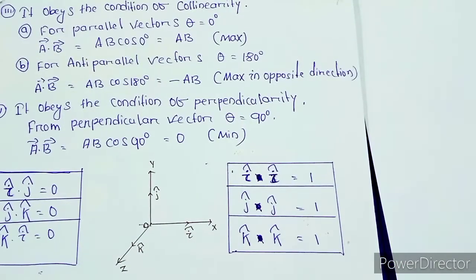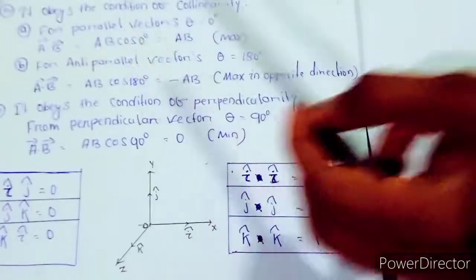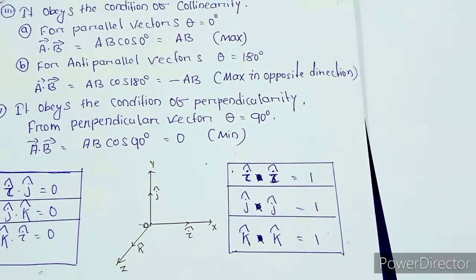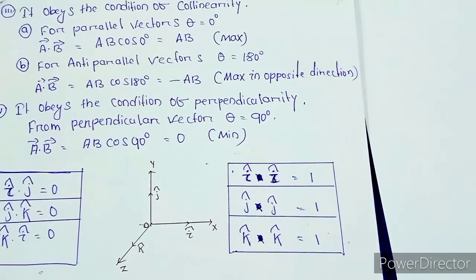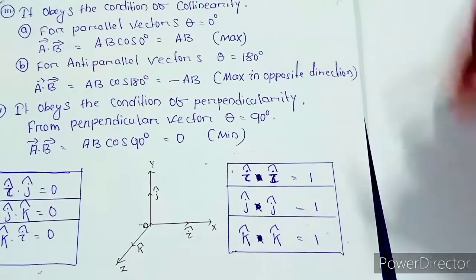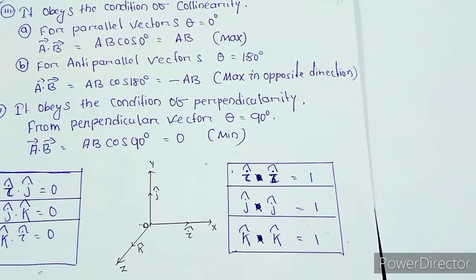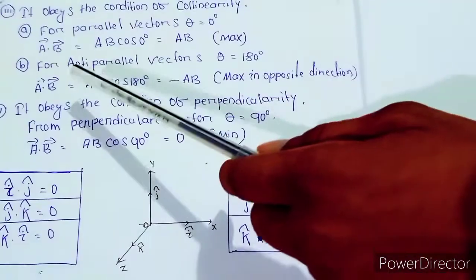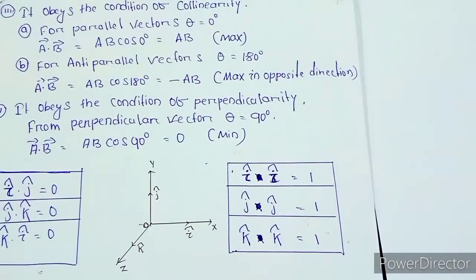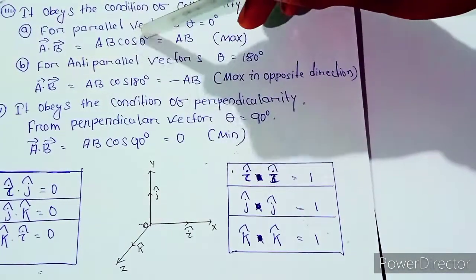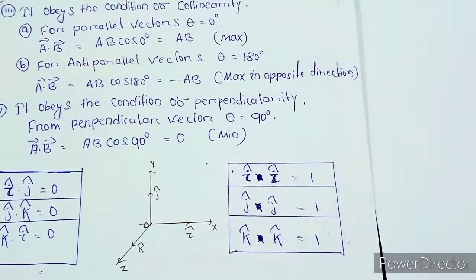The dot product also obeys the condition of collinearity. For parallel vectors, the angle θ equals 0. When θ equals 0, cosθ equals 1, so the dot product equals AB, which is the maximum value.